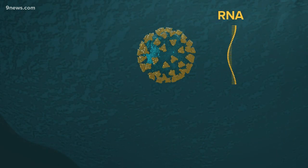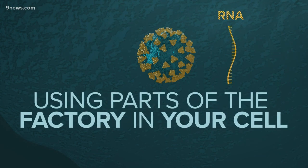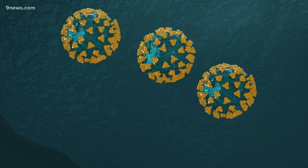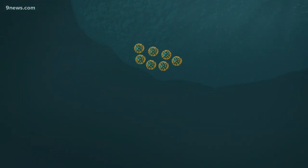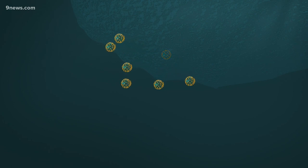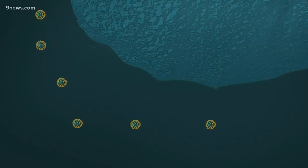This starts a process that ends up using parts of the factory in your cell to make new copies of the virus. And more copies. And more copies. Those new copies start leaving the cell and can travel to other parts of your body to infect more.